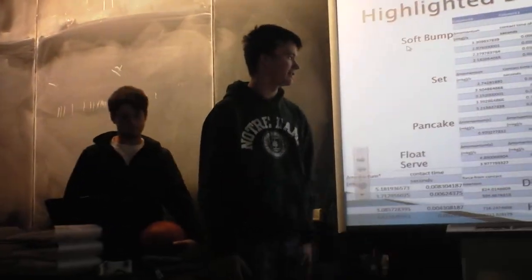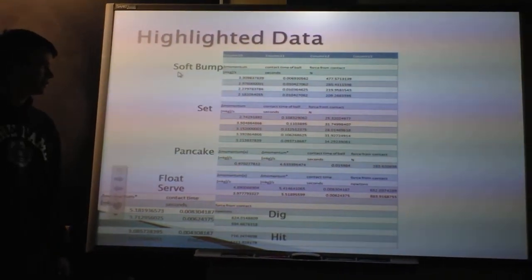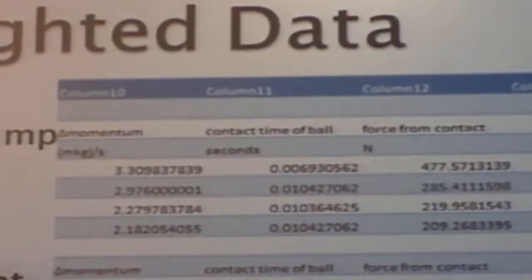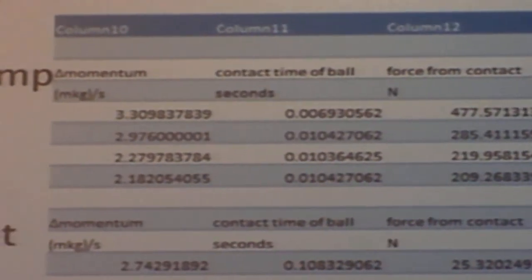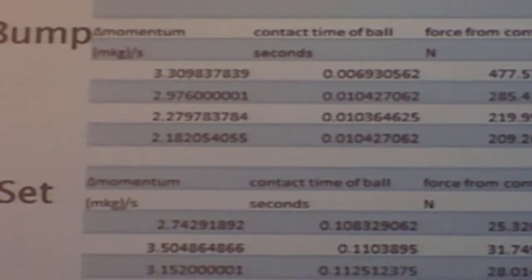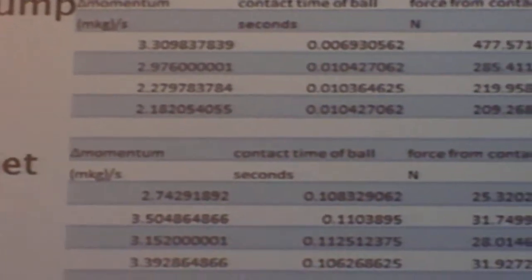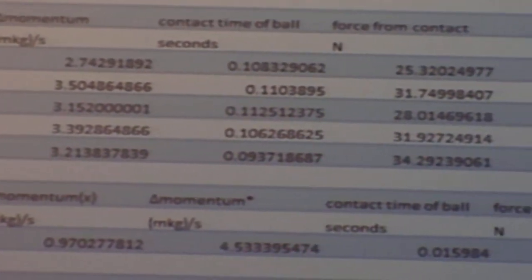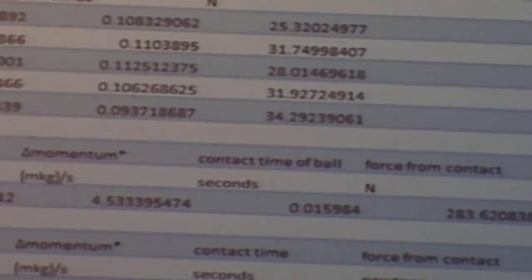These are our highlights. Change in momentum is impulse. It's pretty constant from the soft bump to the set. But what I thought was really cool to look at was the contact time. We got contact time by going back, looking at our data, and seeing how long the ball is actually in contact, like with the soft bump, which is how long it's compressed for. The set was harder to do because you pull the ball back and then push it back up, but we were expecting a way larger contact time, which was about ten times as large as the other ones.